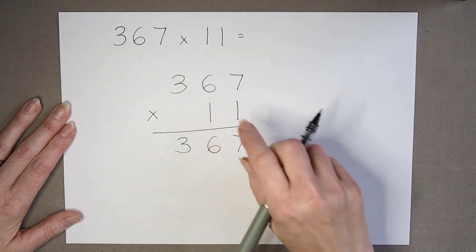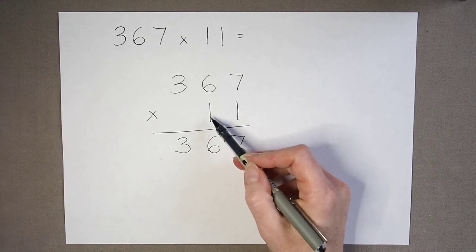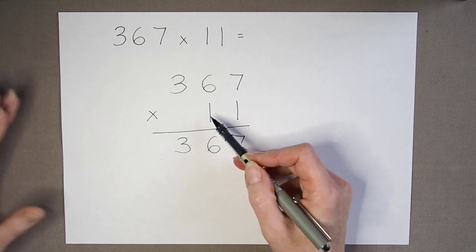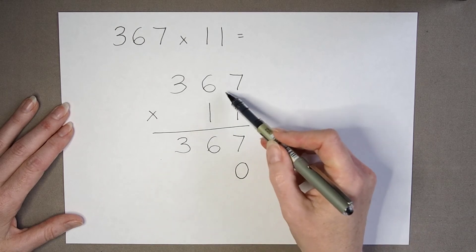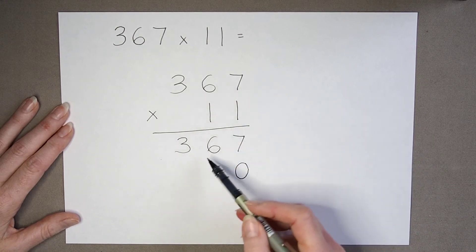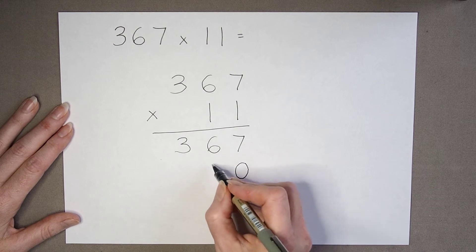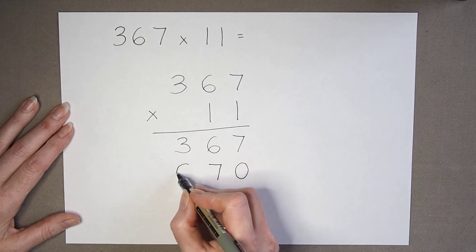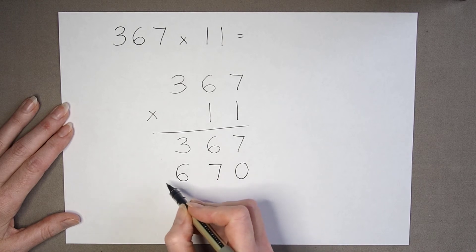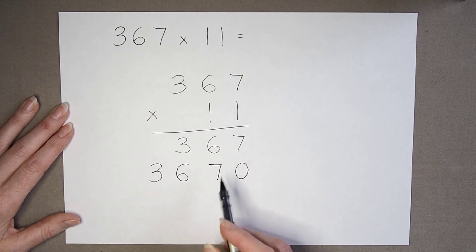And now if we move on to our tens column, again we're multiplying by 1. But we've got to remember to put our placeholder in. But if I multiply this number again by 1, I can see I'm just going to have the same number written down, just moved along one space: 1 times 7 is 7, 1 times 6 is 6, 1 times 3 is 3.